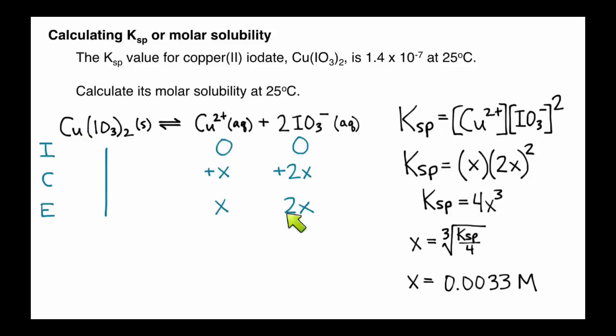And so whatever this X is, 0.0033 molar, that's going to be what my molar solubility is. If there was a 2 here and a 1 here, then I would have to take that X value and divide it in half. But in this case, it's a 1 to 1 ratio, so this will be my molar solubility.